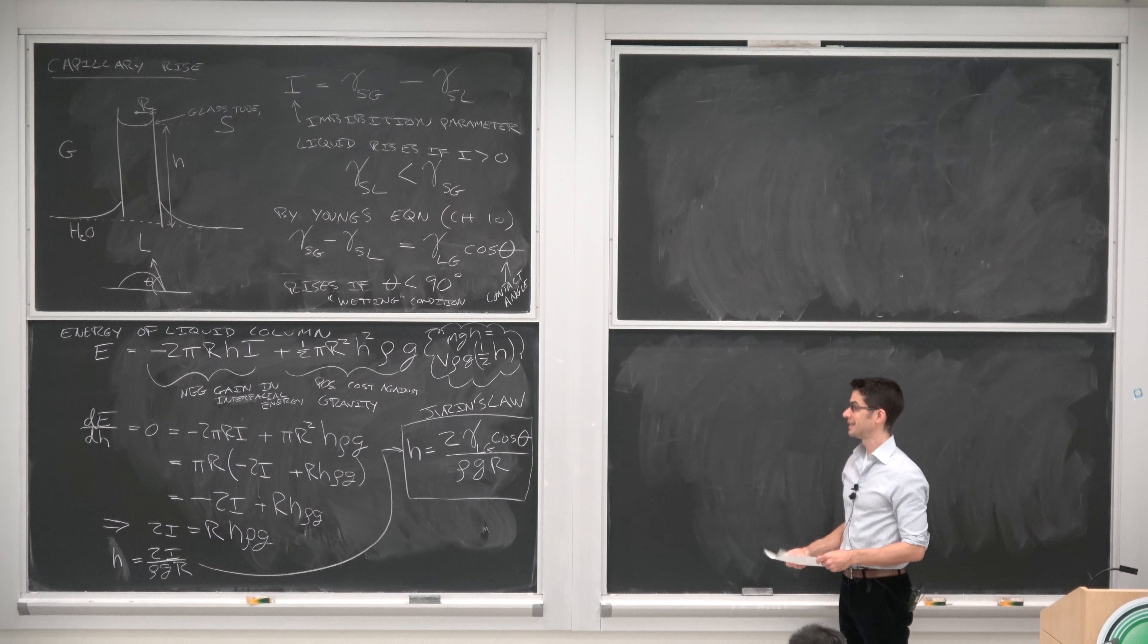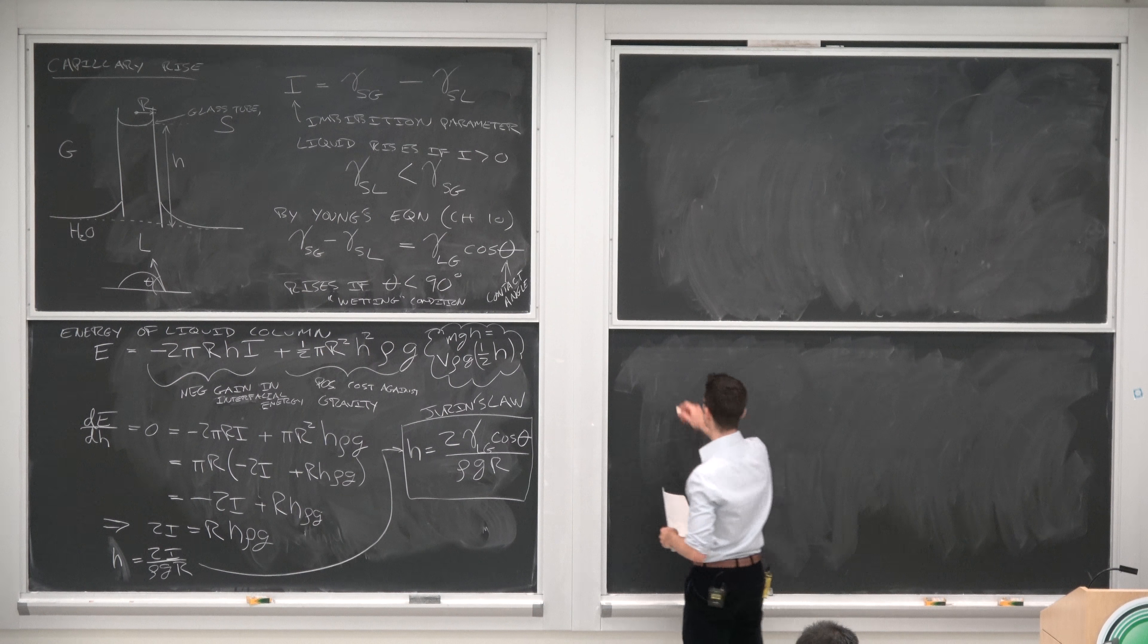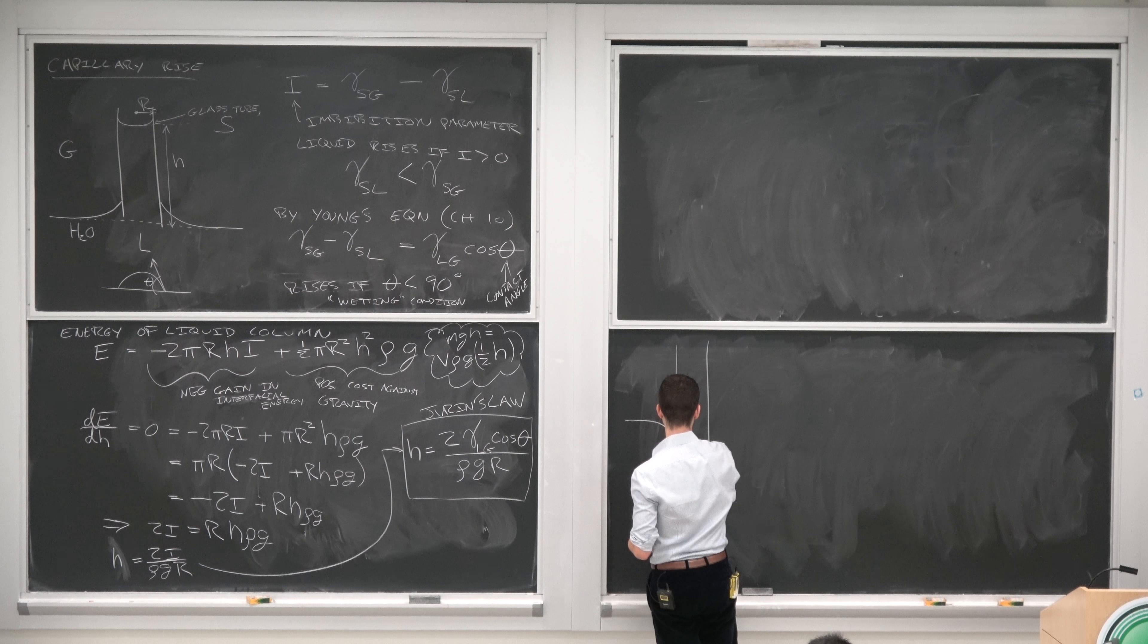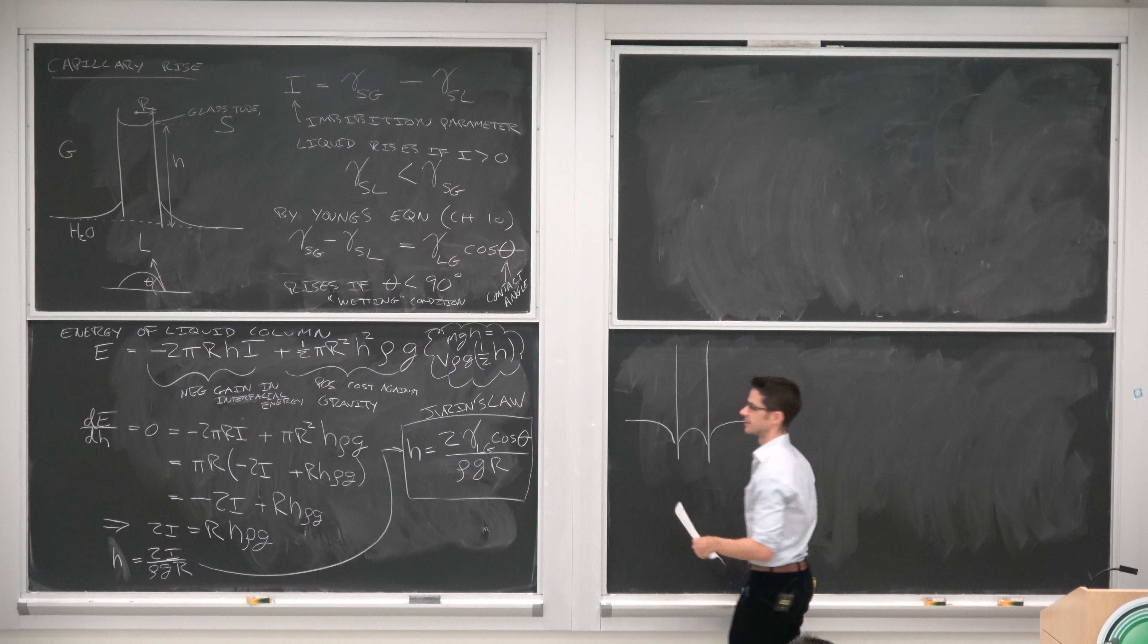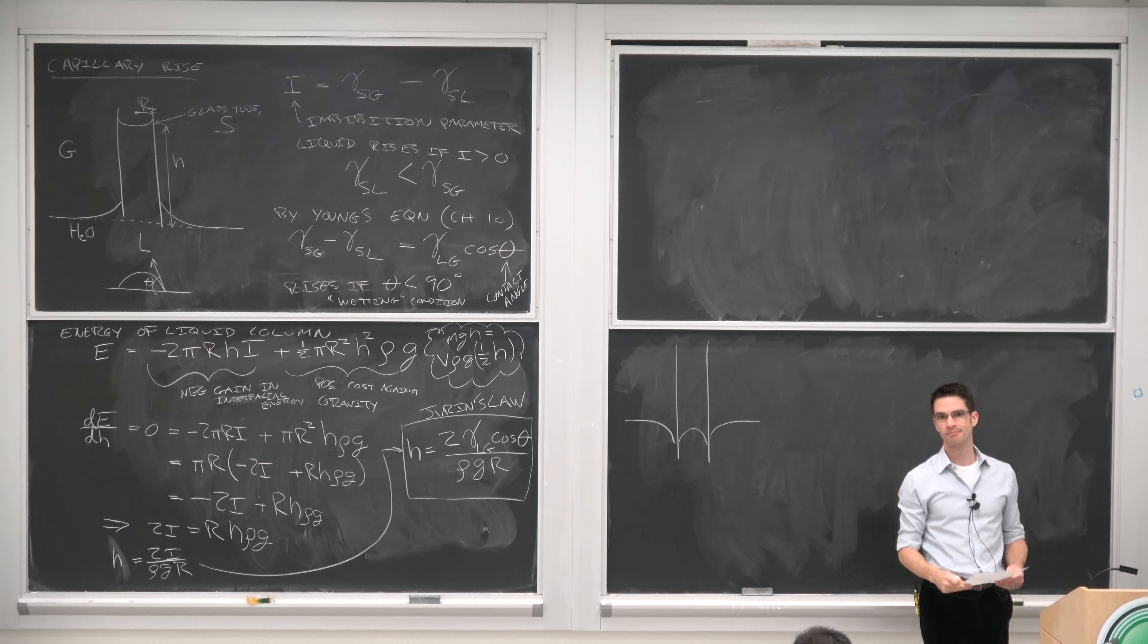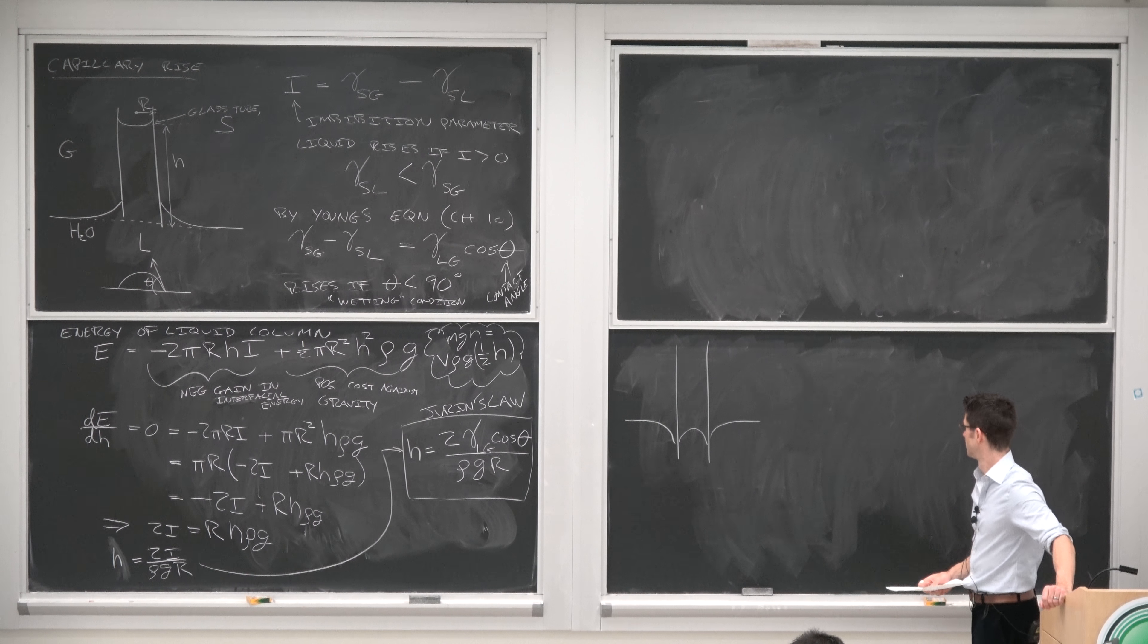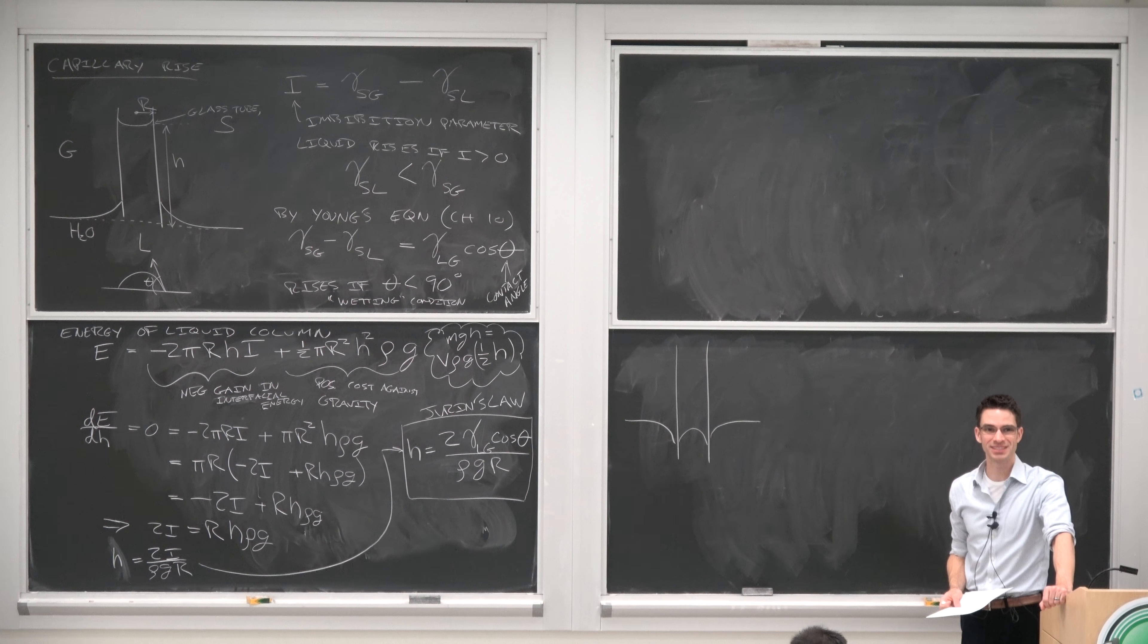One might ask oneself what happens, what circumstances might lead to a scenario like this. What liquid might give a really convex surface, convex surface?